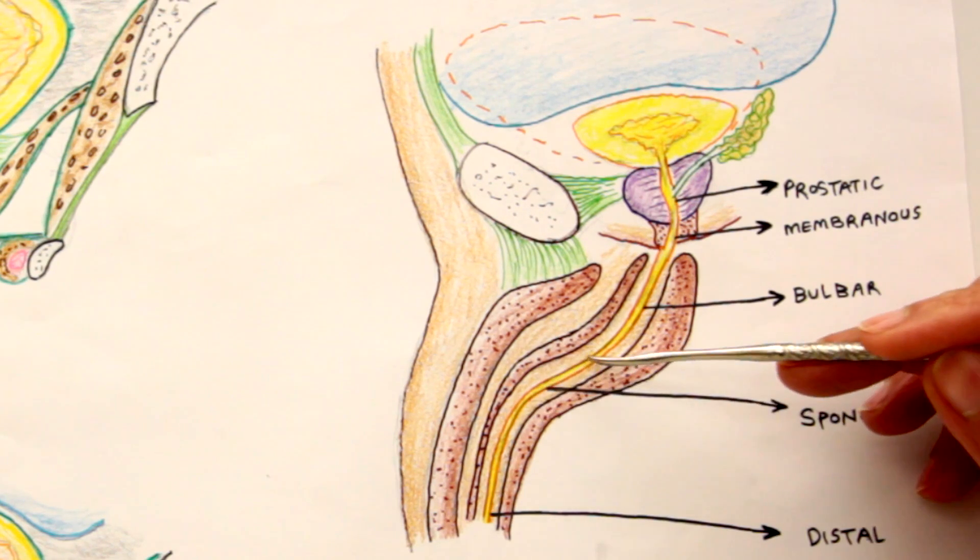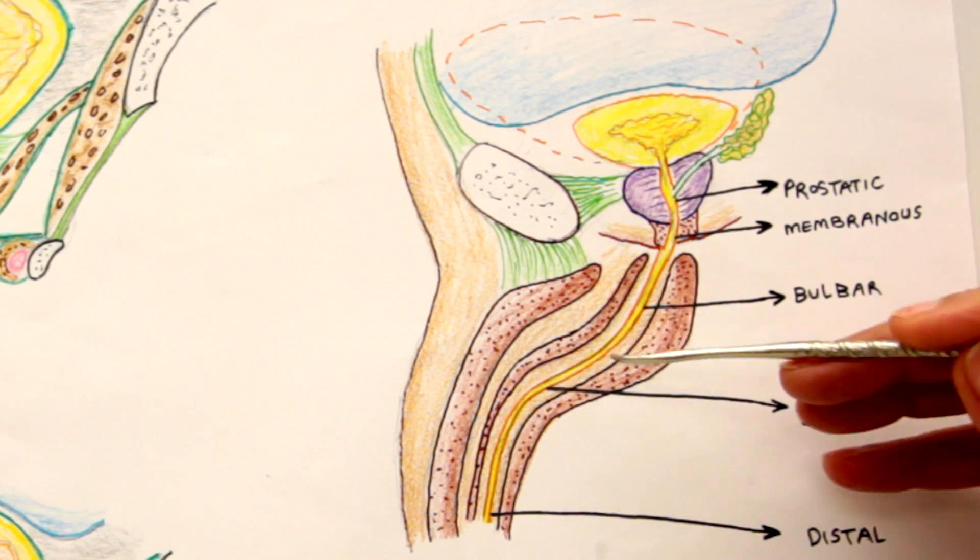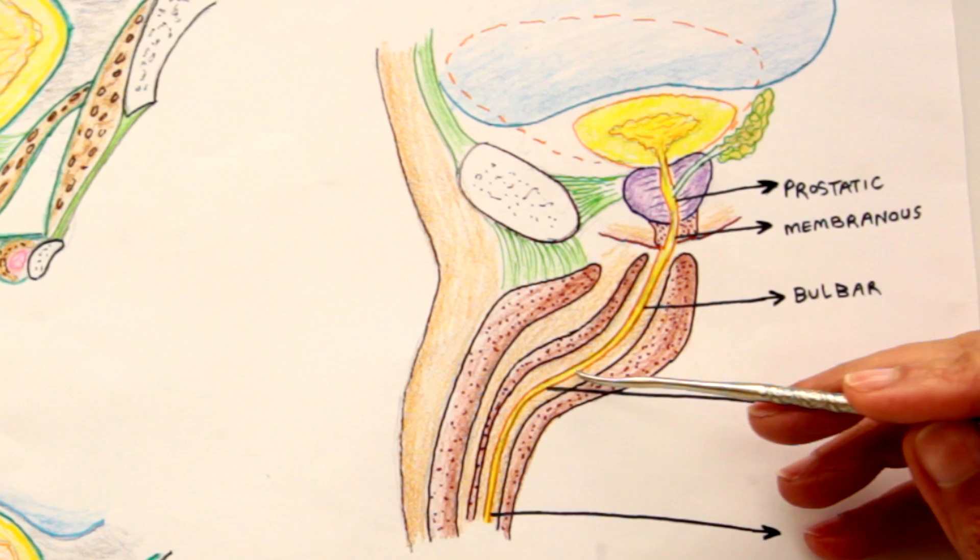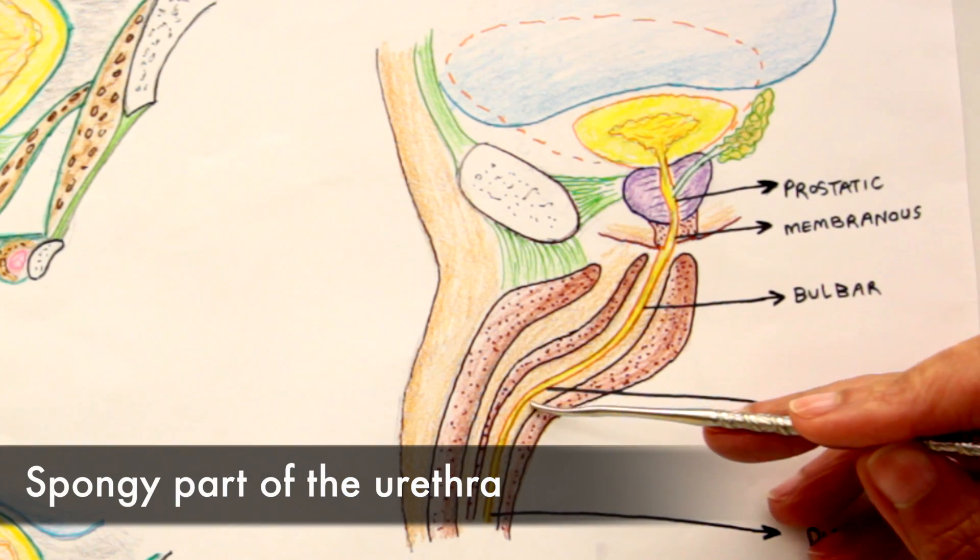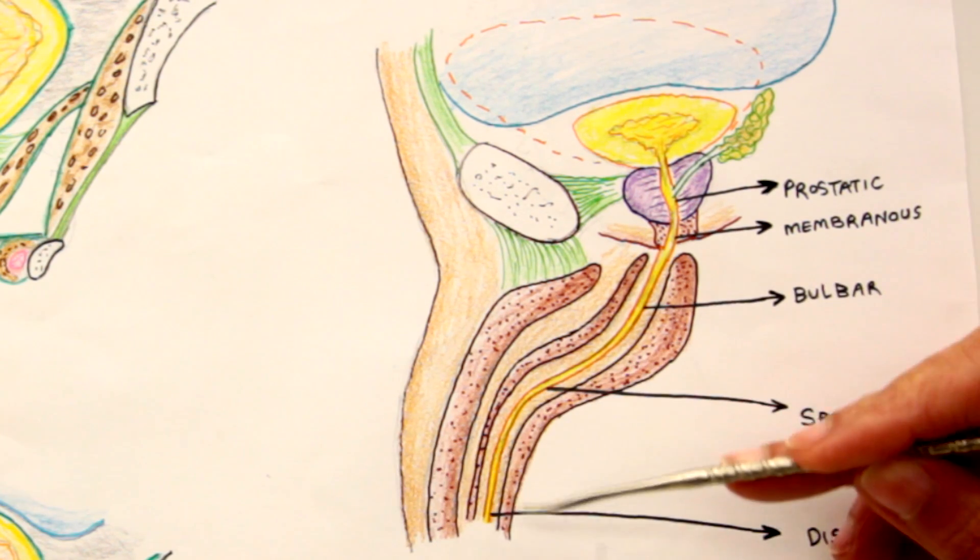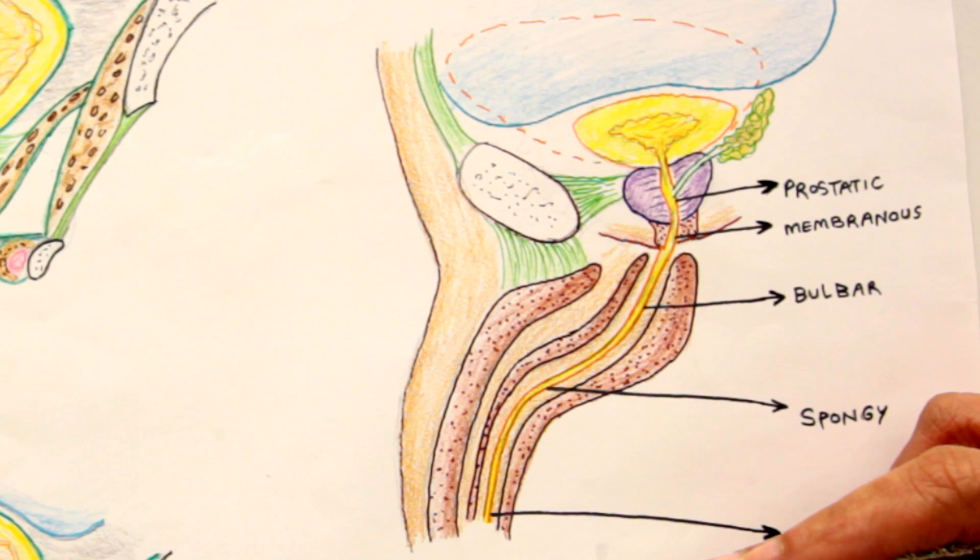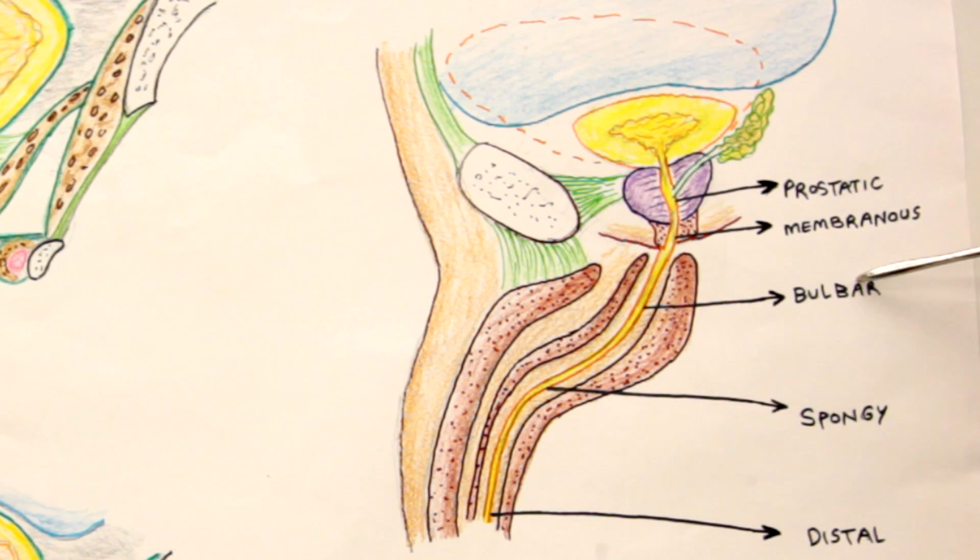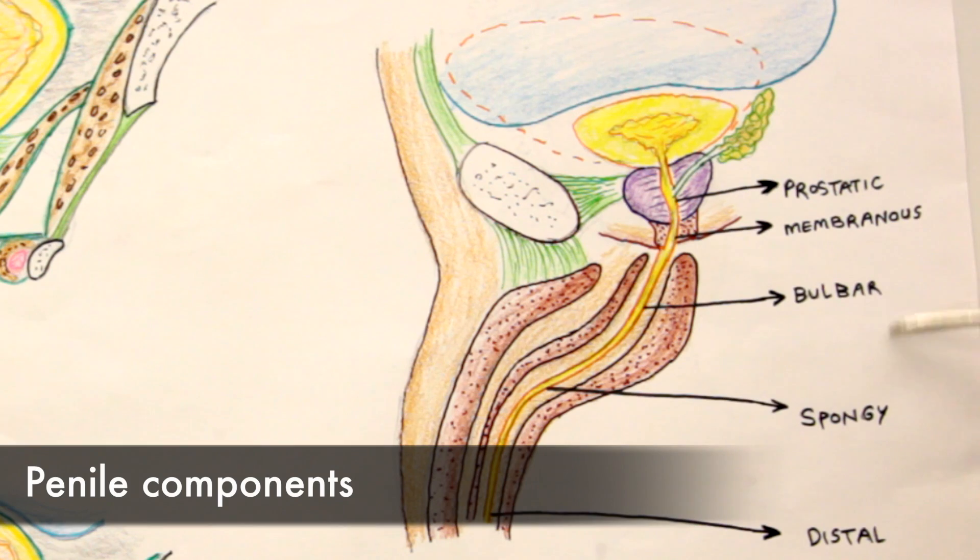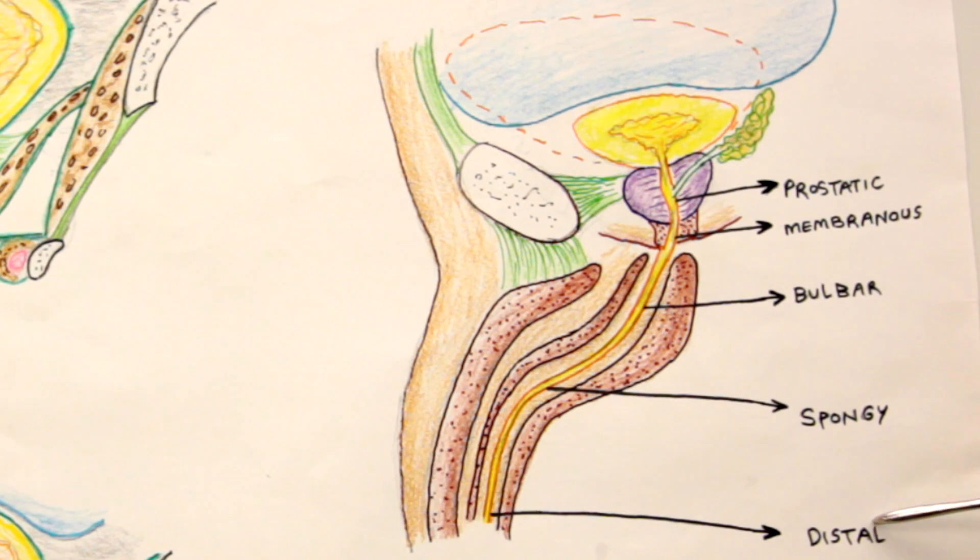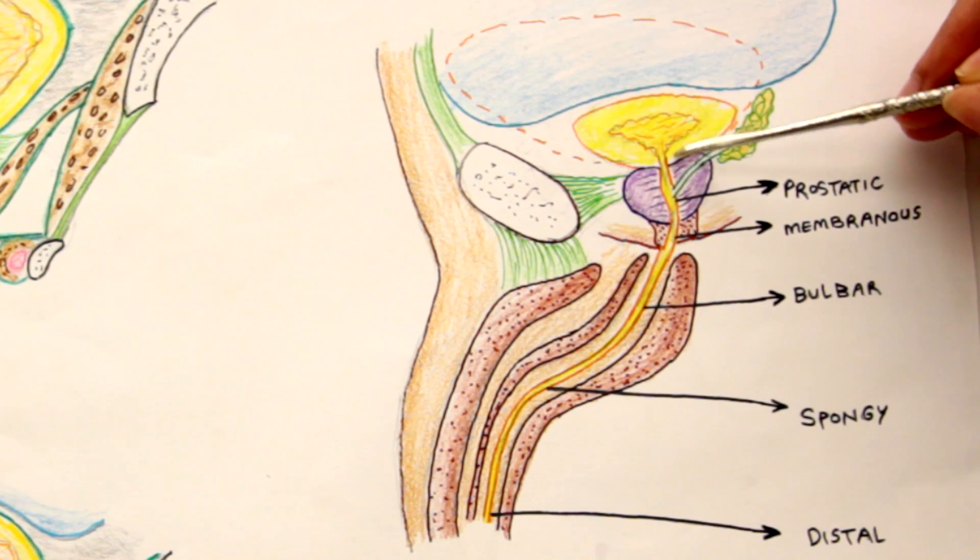Then it crosses the shaft of the penis—this is the spongy part of urethra. The distal part will go down to the tip of the penis. These three parts—the bulbar, spongy, and distal parts of urethra—are known as the penile components. This is the penile urethra, which is the longest among all five.